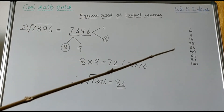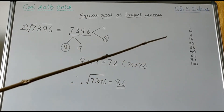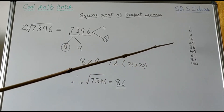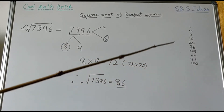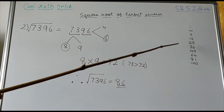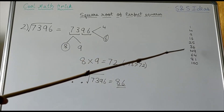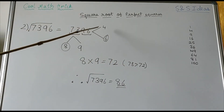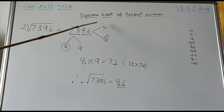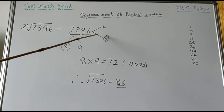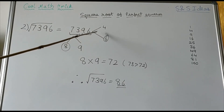First we will divide it into two groups. The first group is 96 — that is the last two digits — and the other group is 73. Now, which two square numbers end with the digit 6? Yes, it is 4 squared (16) and 6 squared (36). So now we write the two possibilities of the unit digit of our square root — it is 4 and 6.